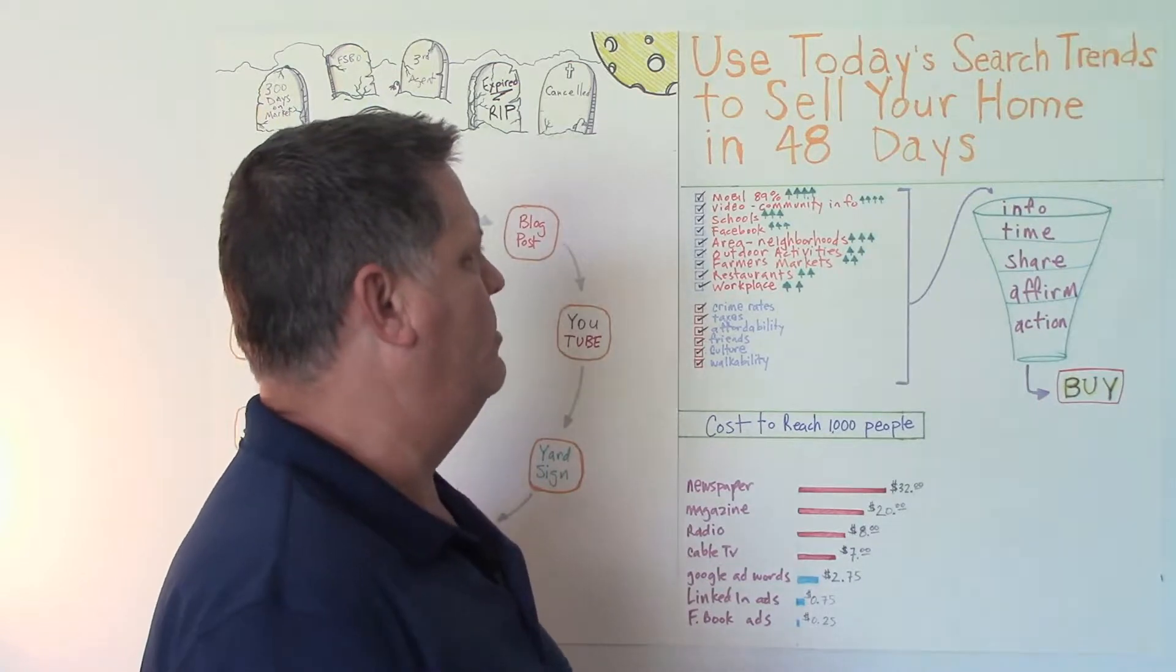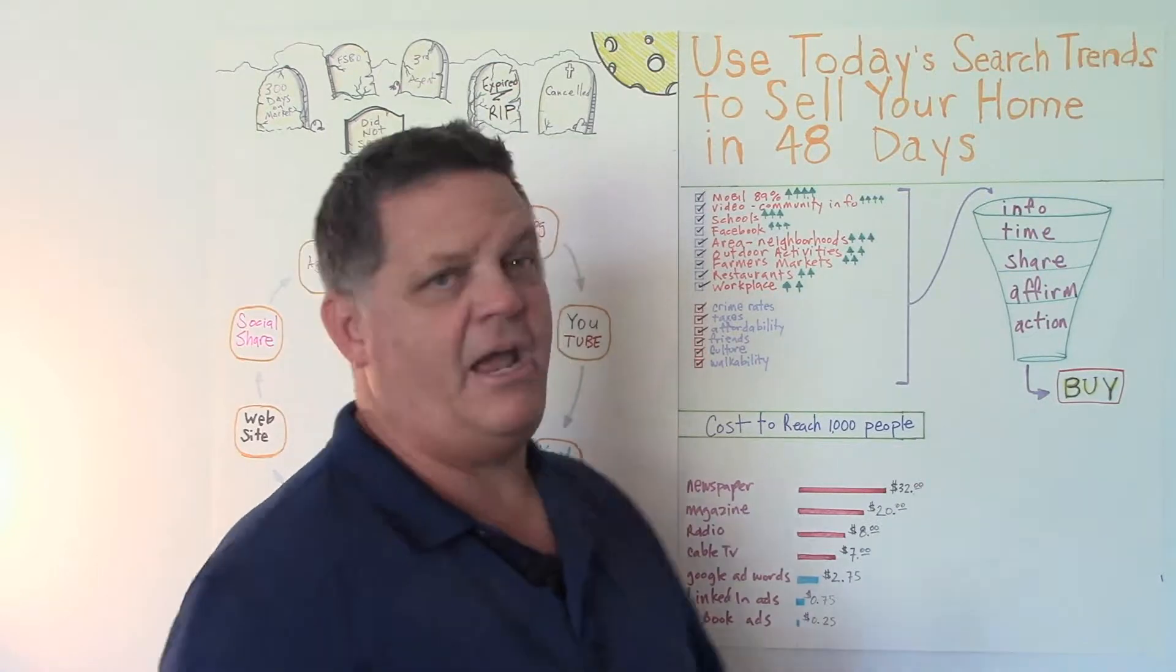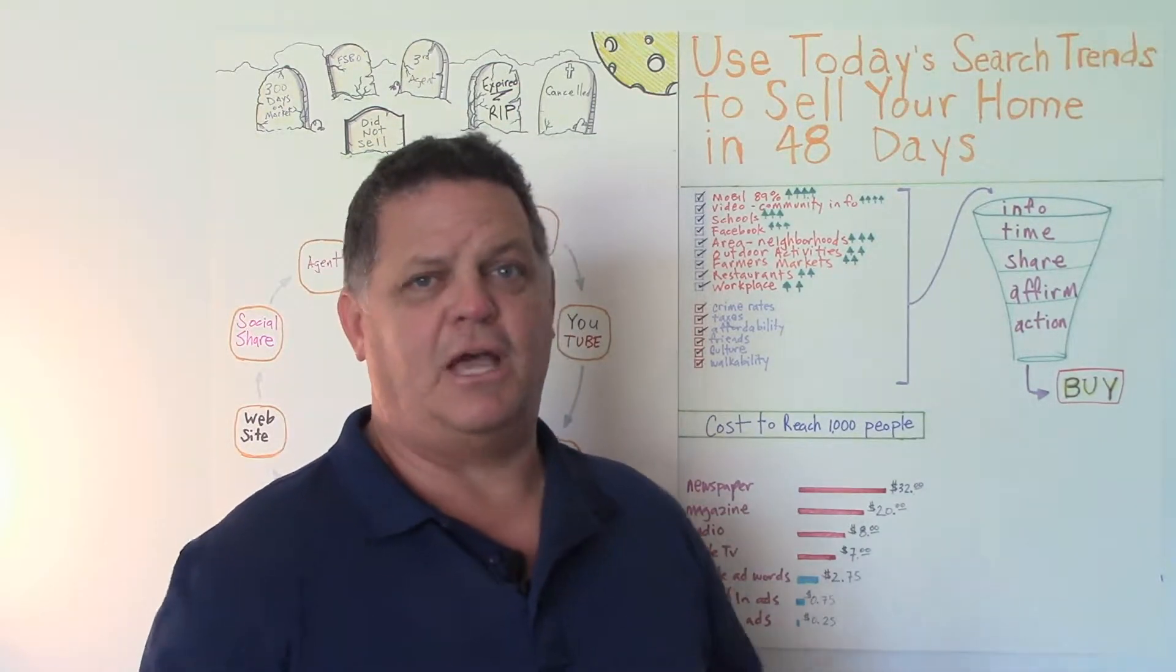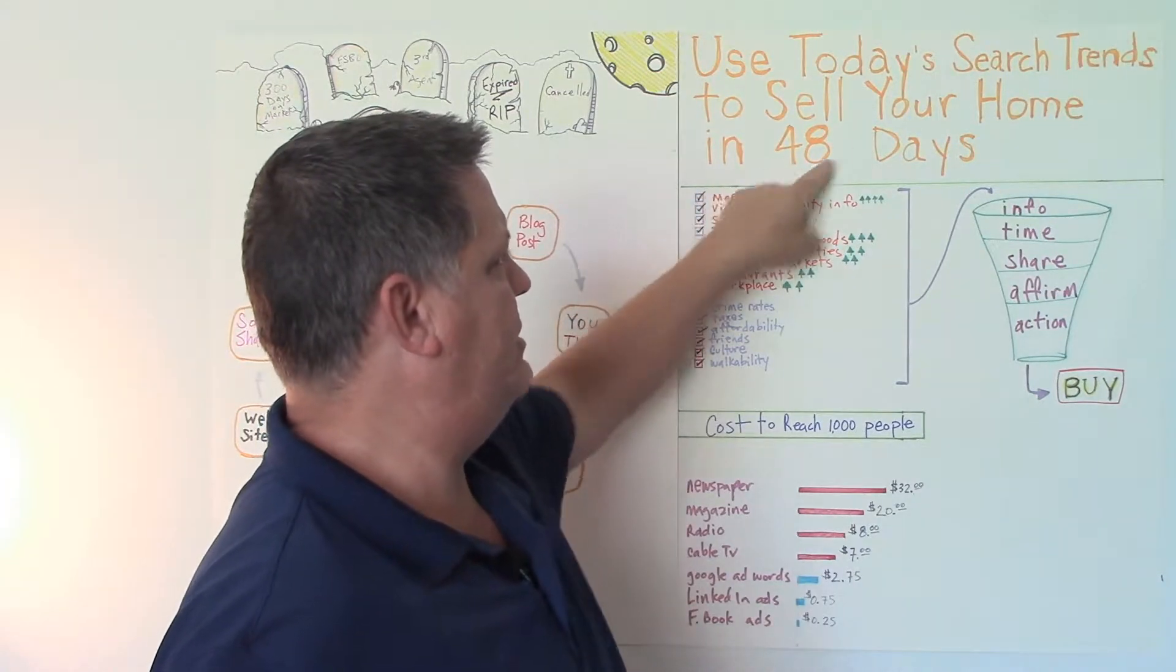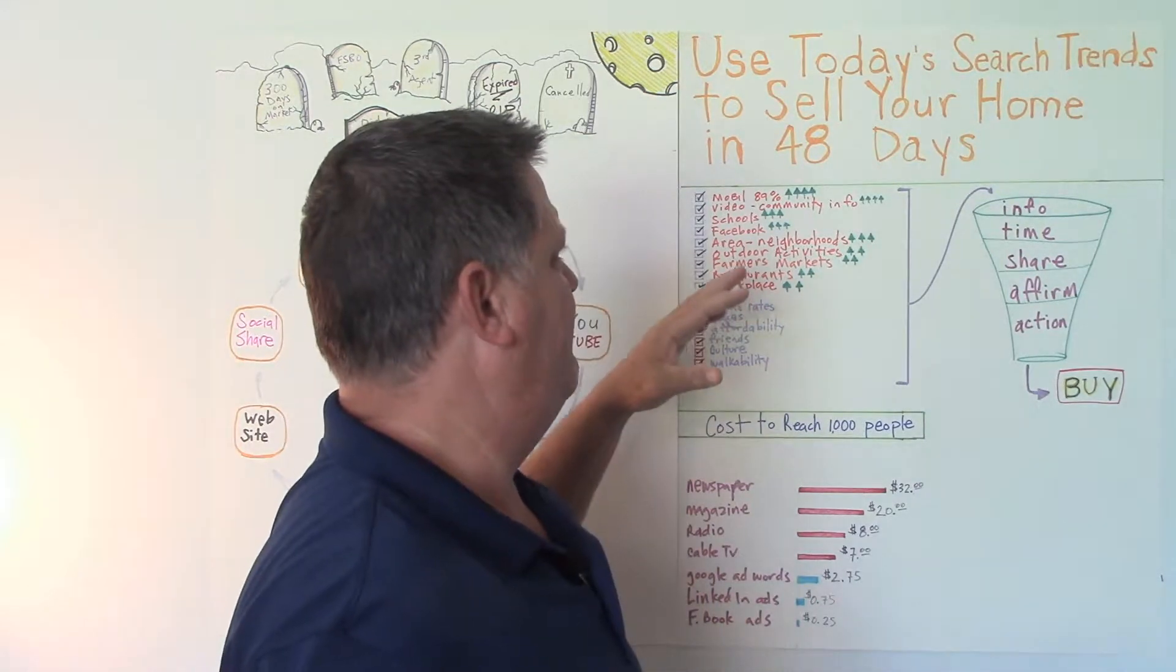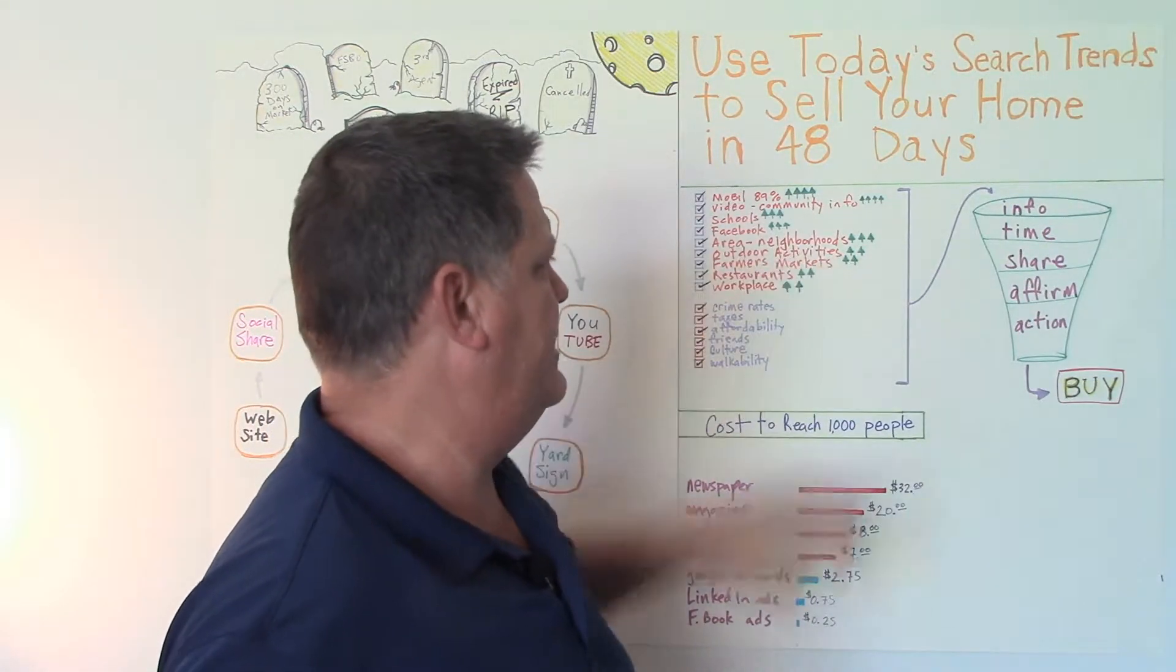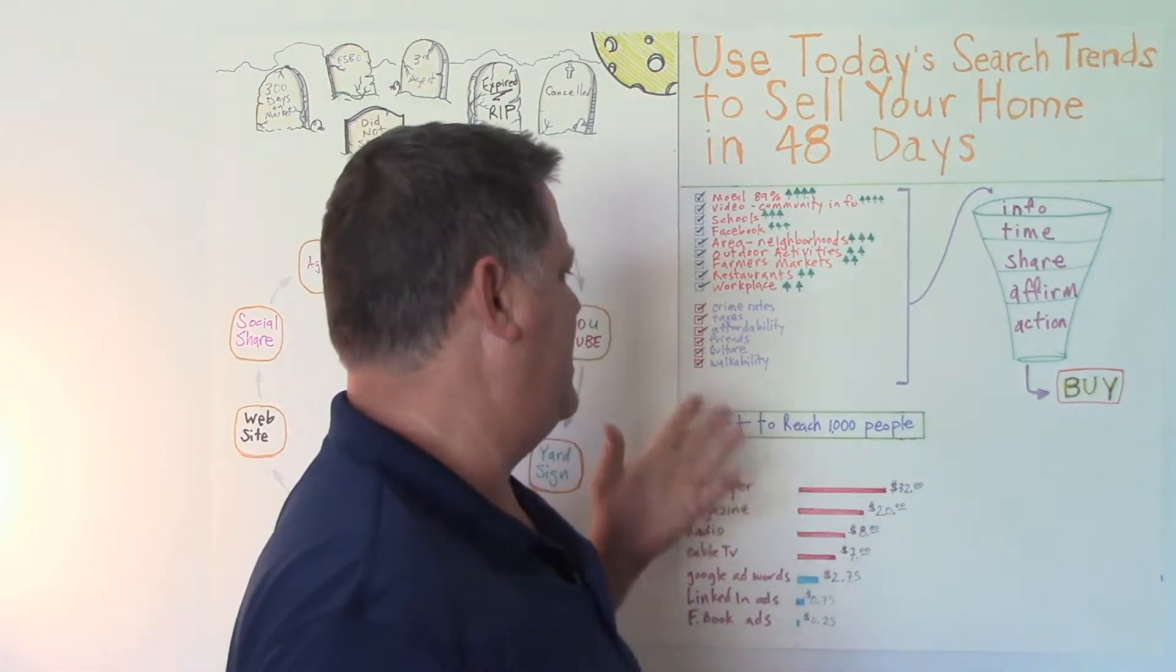So how do we get all this information to the buyer so that they're interested in your home? And why do some homes, well actually, most homes in Phoenix right now are taking an average of 70 days or more to sell. And many of them take a lot longer than that. That's just the average. Currently, my average seller is selling their home within 48 days, some a lot less than that. But very rarely does it go over this 48 days, because we're trying to do a good job of leaning on these functions, making sure that people are getting the information that they need.